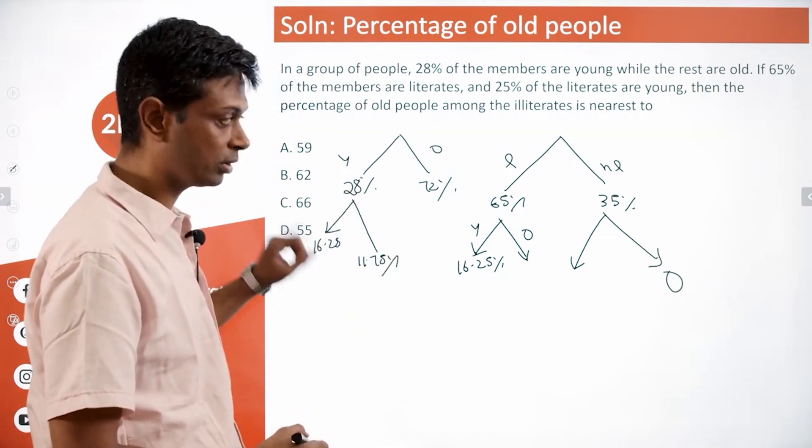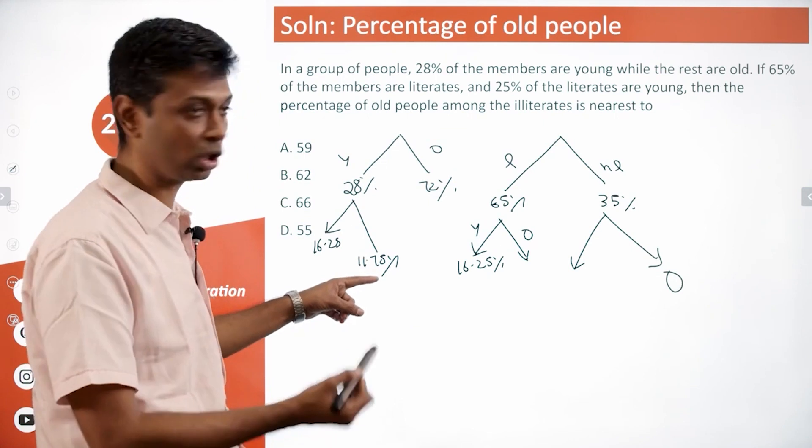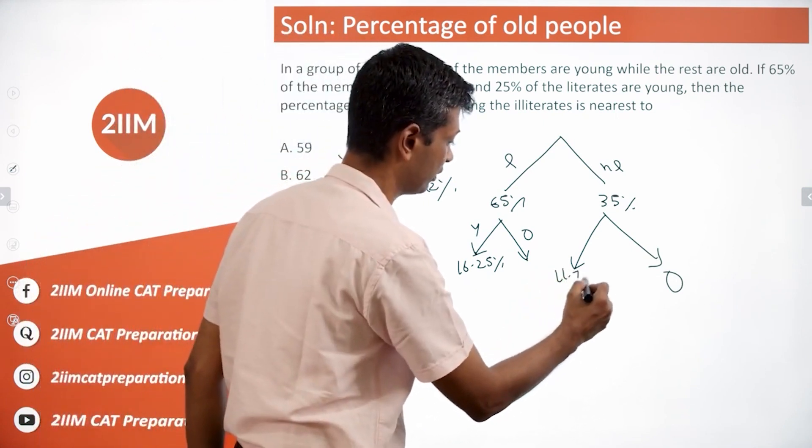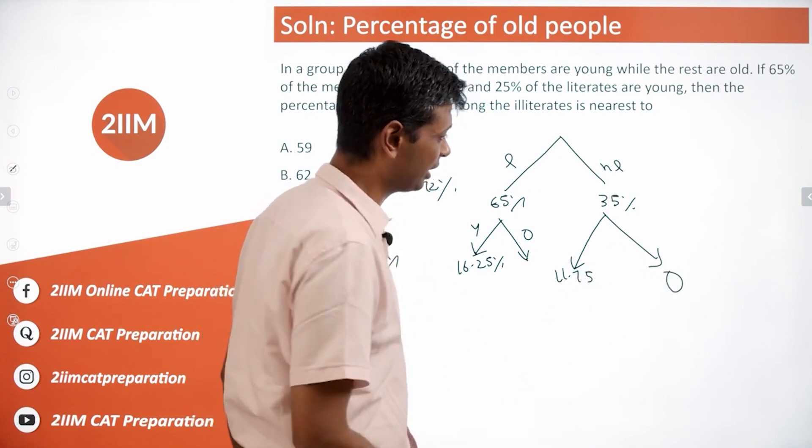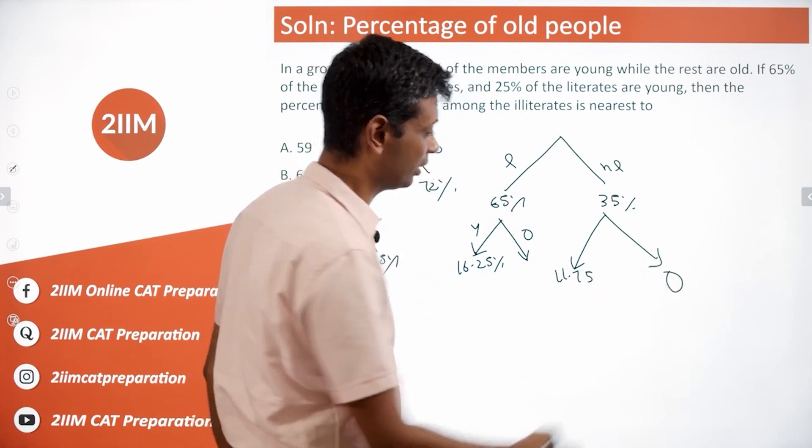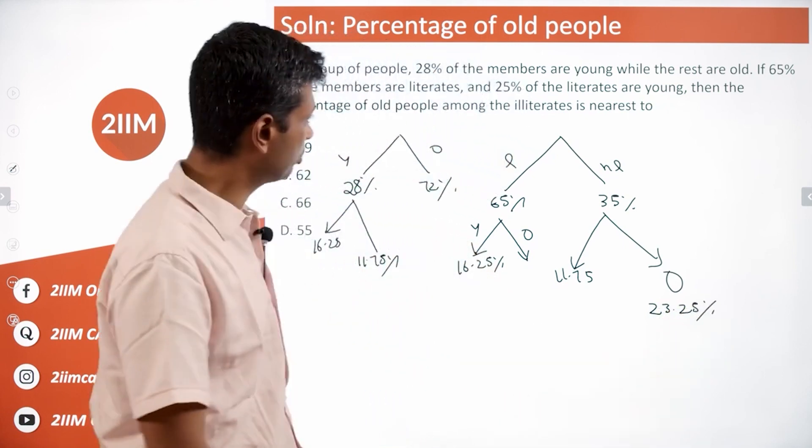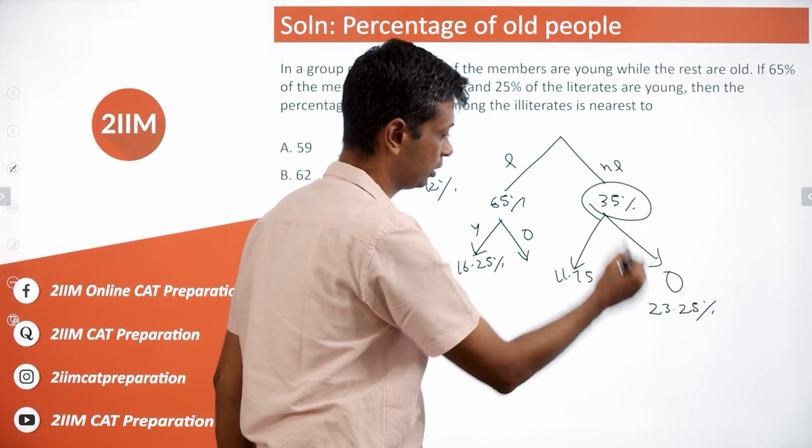This is the young population, so this is 11.75. The remaining is here - 35 minus 12 is 23, this will be 23.25 percent. So what percentage of this number is this number? That's our question. We're looking for 23.25.